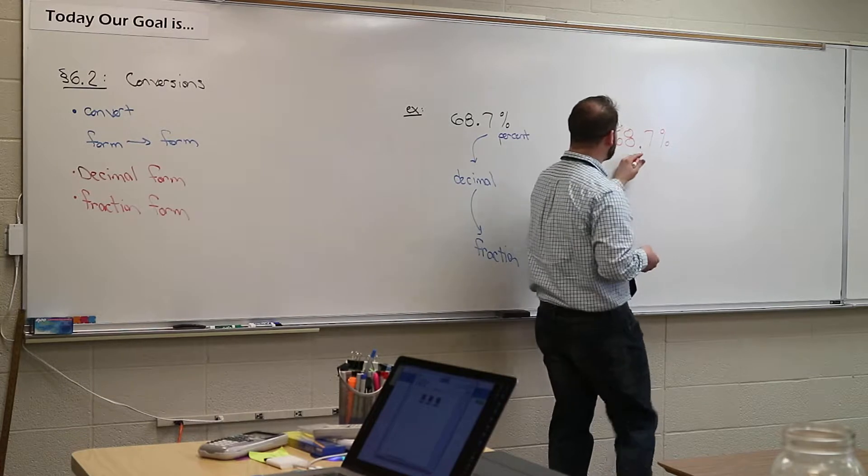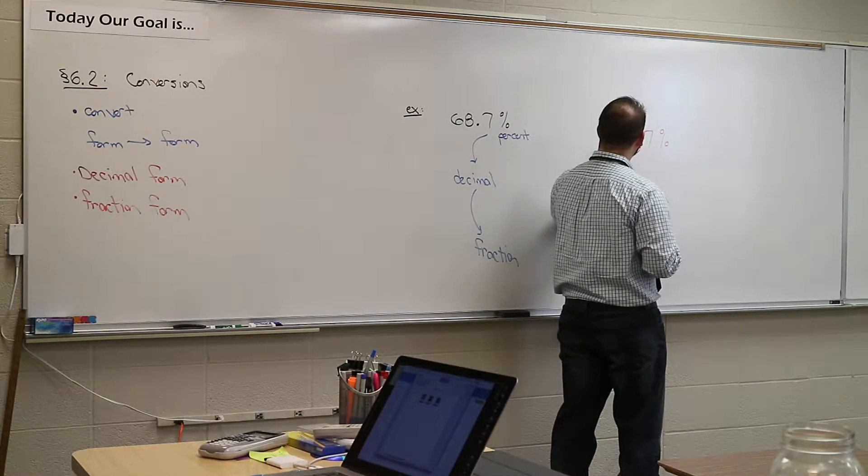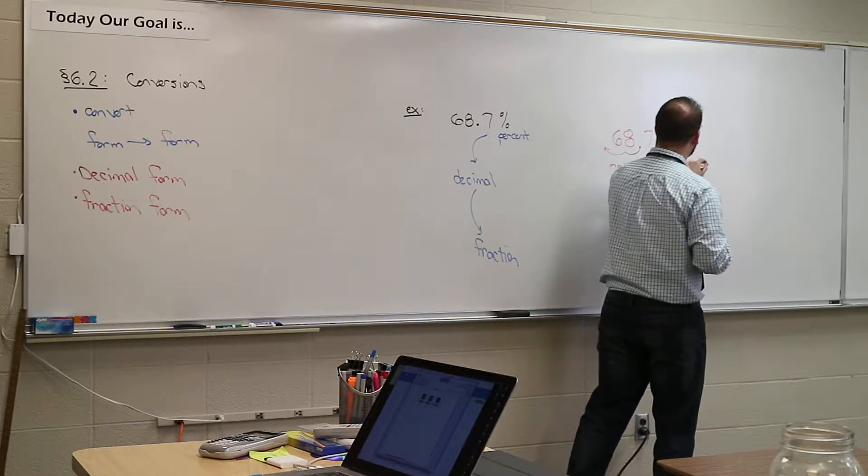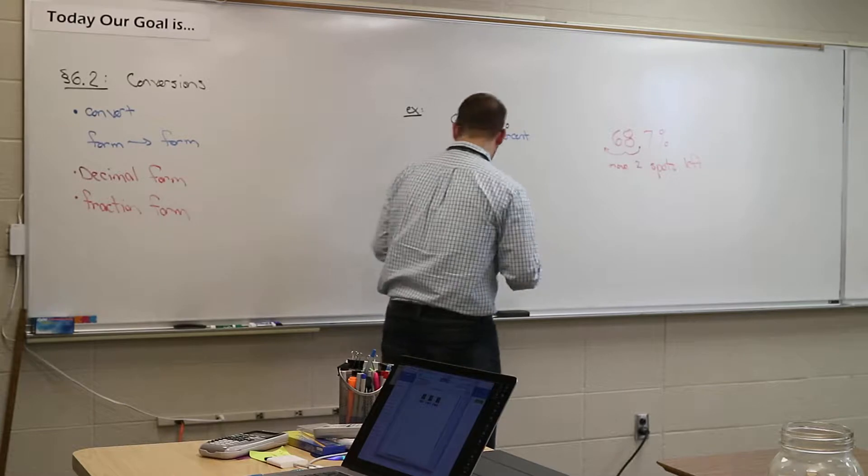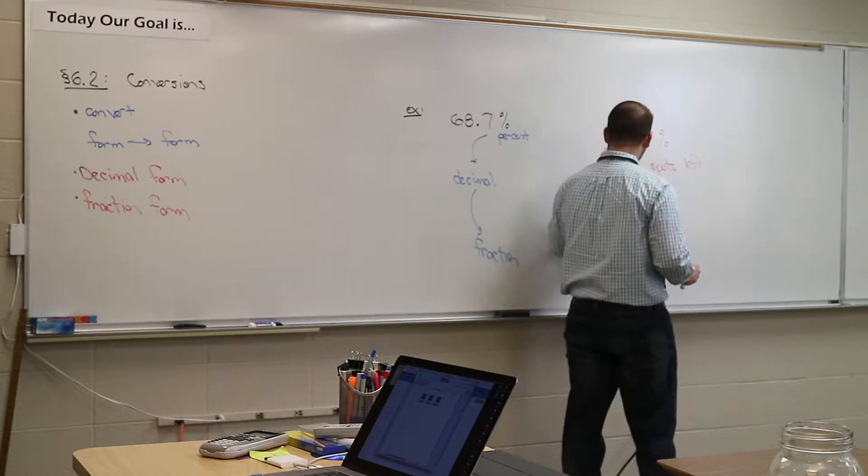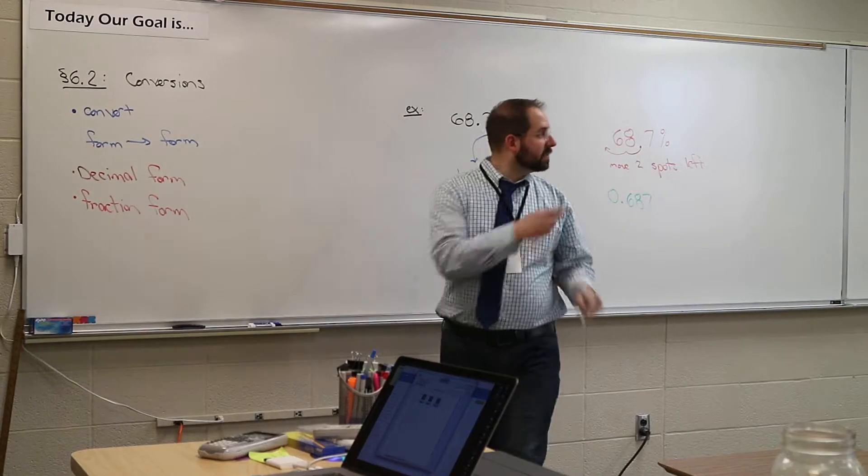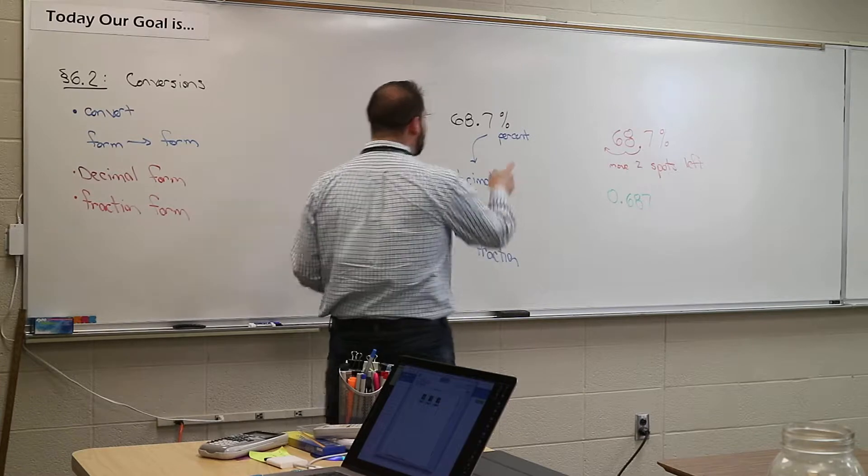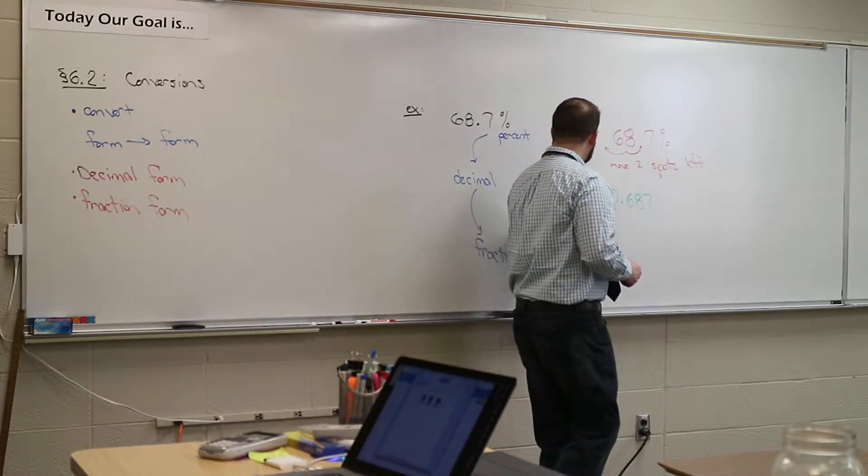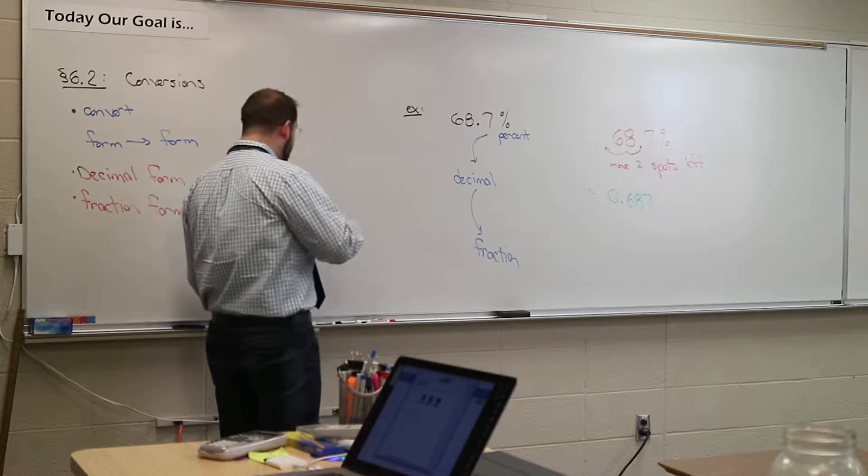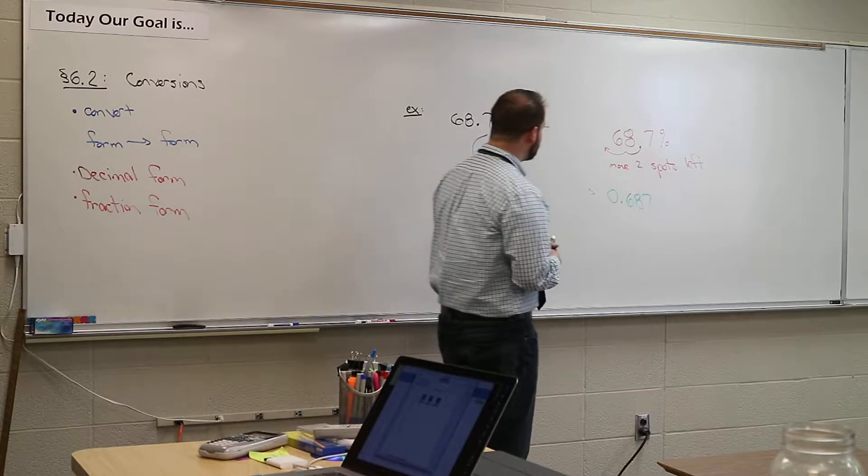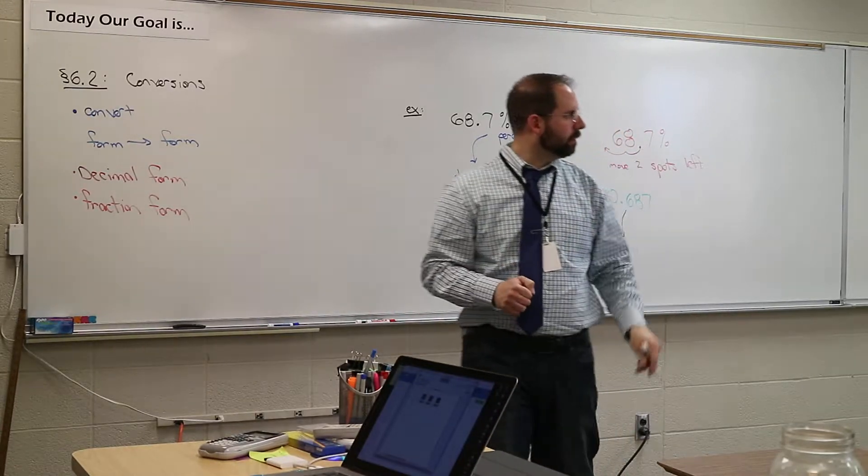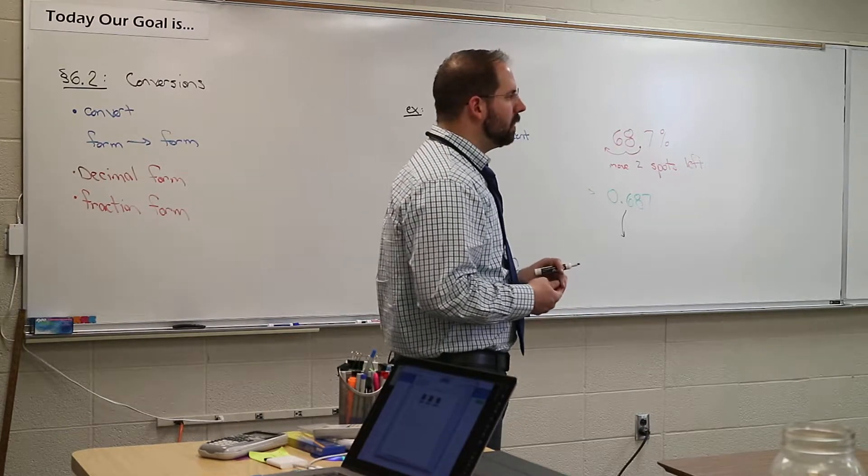Move two spots left, and that will change it back to a decimal. So if I move it over two spots, what's my number now? 0.687. Does everyone understand that when I move it back? That's the decimal order. Because you always move it back two spots. If I move it back, I can change it to a percent. But now, to write that as a fraction, the first one's done. I wrote it as a decimal. To write it as a fraction, now it's harder. The most difficult part of now changing this is we have to now figure out how do I convert this to a fraction? How many numbers are behind the decimal point?